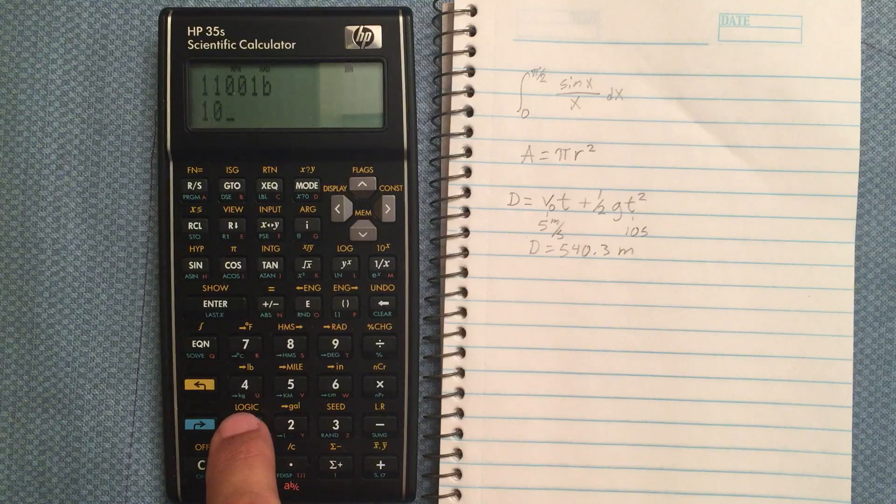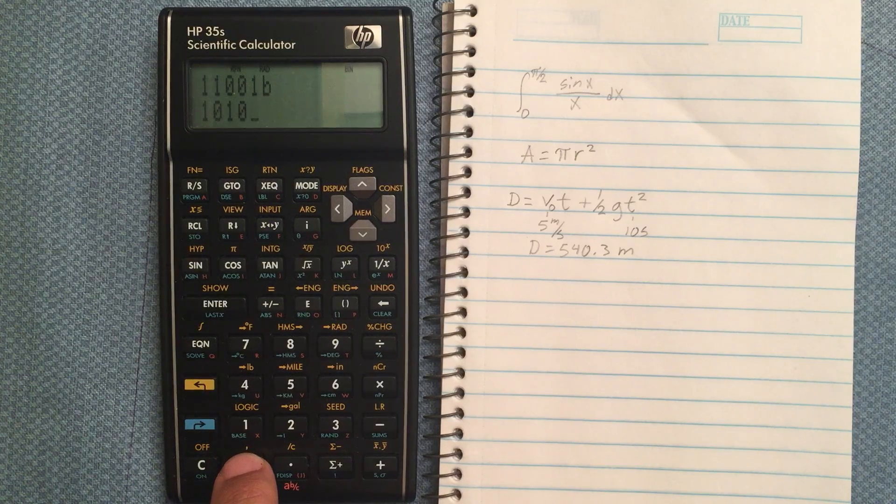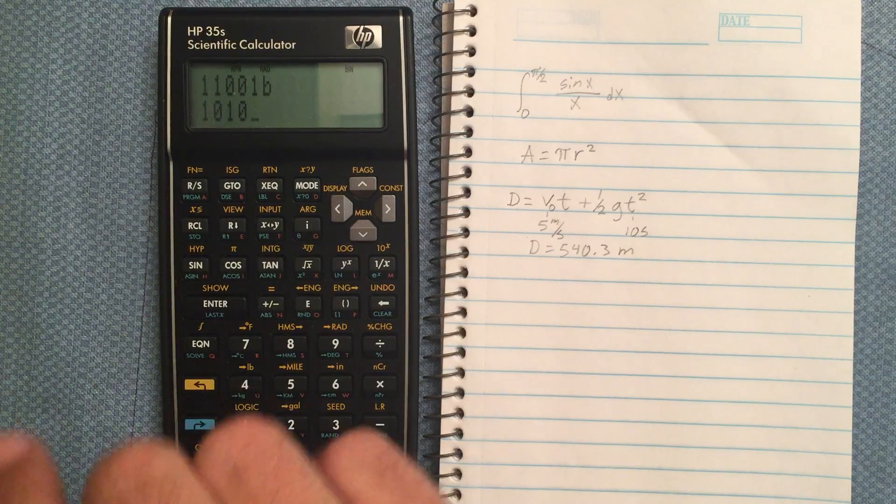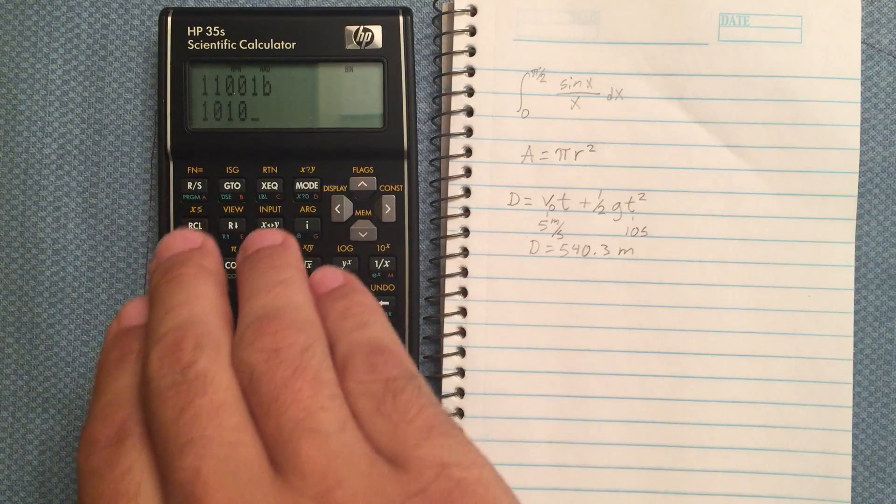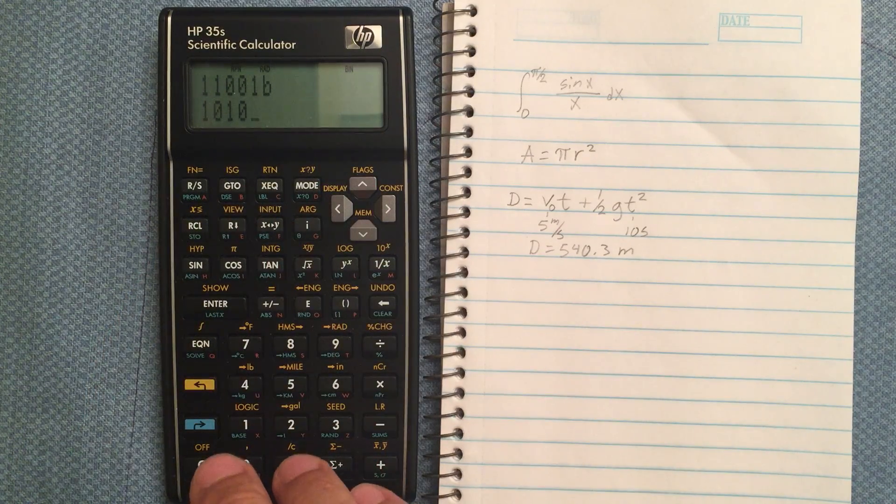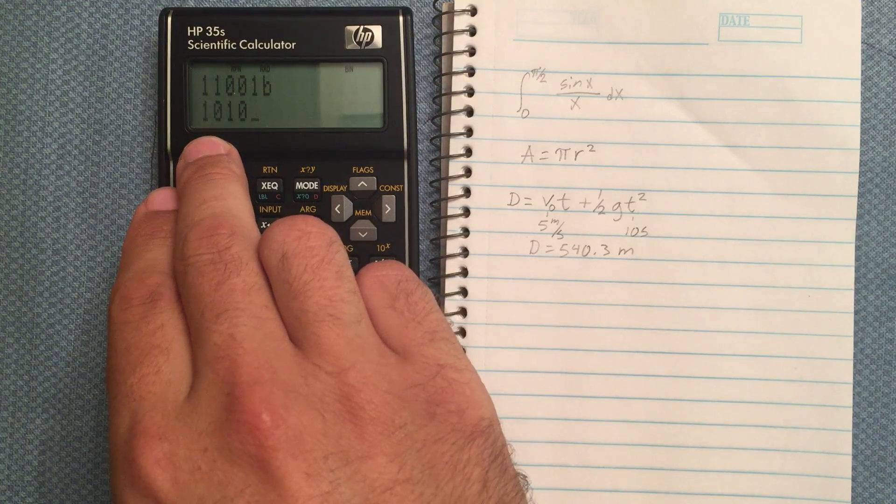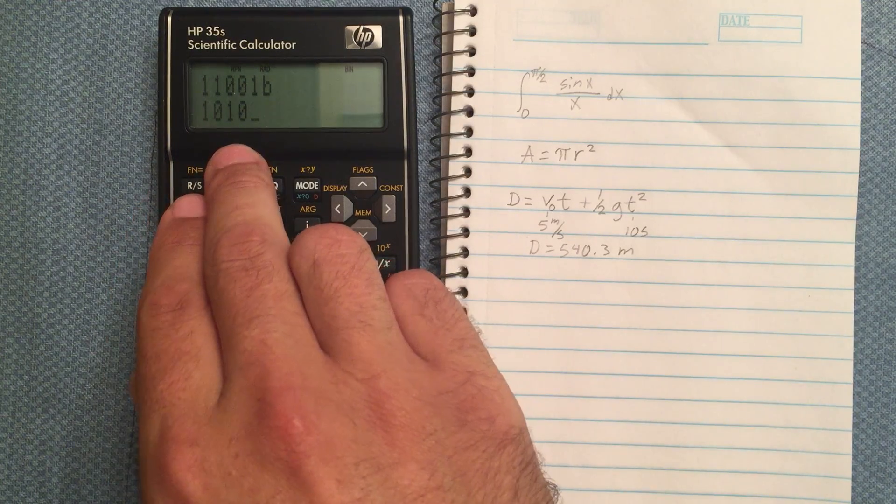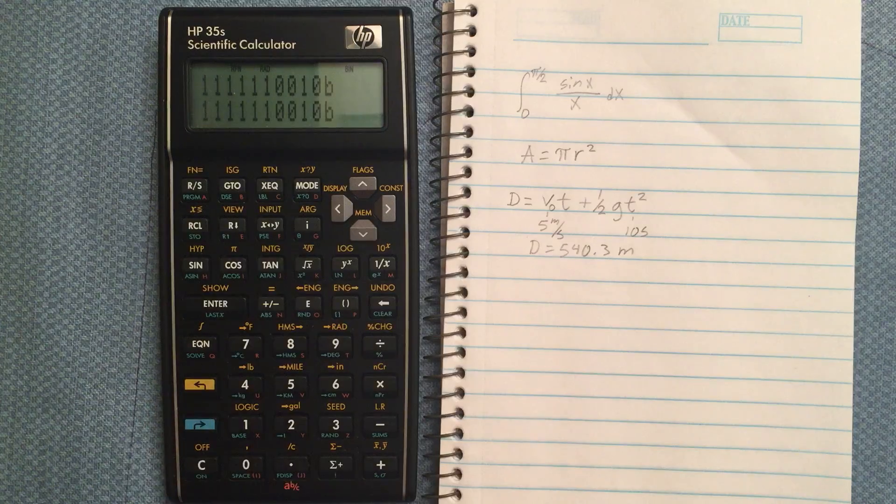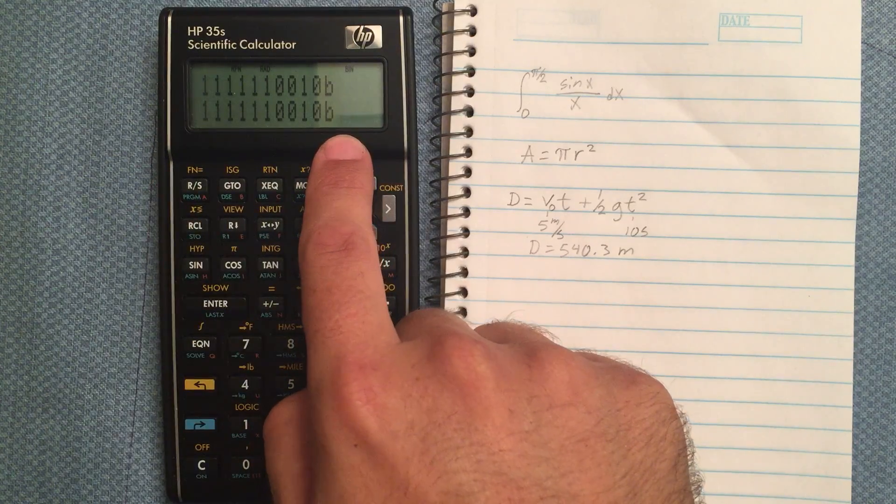If I hit 1, 0, 1, 0, which if you recall was 10 in binary to decimal, it will assume that that is 1010 in decimal. So if I hit enter, it switches that to binary.